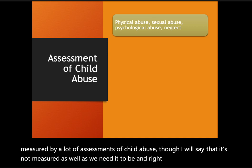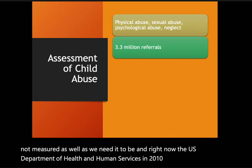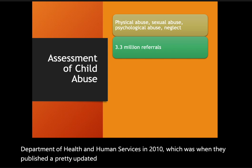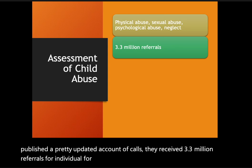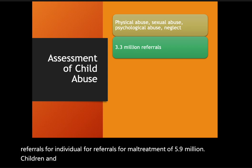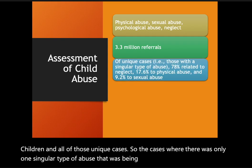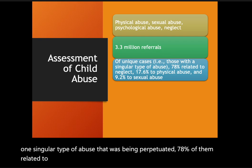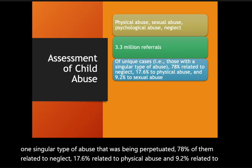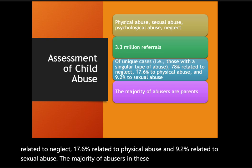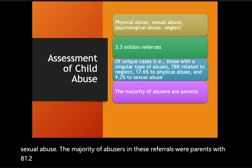Right now, the U.S. Department of Health and Human Services in 2010 published a pretty updated account of calls — they received 3.3 million referrals for maltreatment of 5.9 million children. For unique cases where there was only one singular type of abuse being perpetuated, 78% related to neglect, 17.6% related to physical abuse, and 9.2% related to sexual abuse. The majority of abusers in these referrals were parents at 81.2%, with 84.2% of those being biological parents.